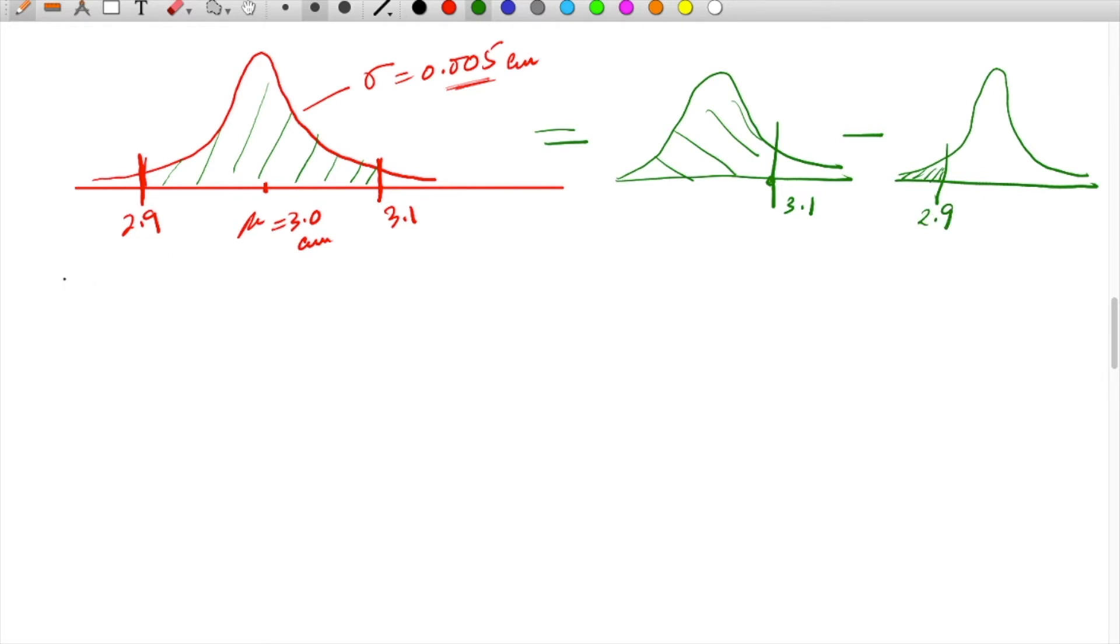What we're looking for is the probability that X is outside the range 2.9 to 3.1. So we want 1 minus the probability of X between 2.9 and 3.1, which equals this area plus this area.